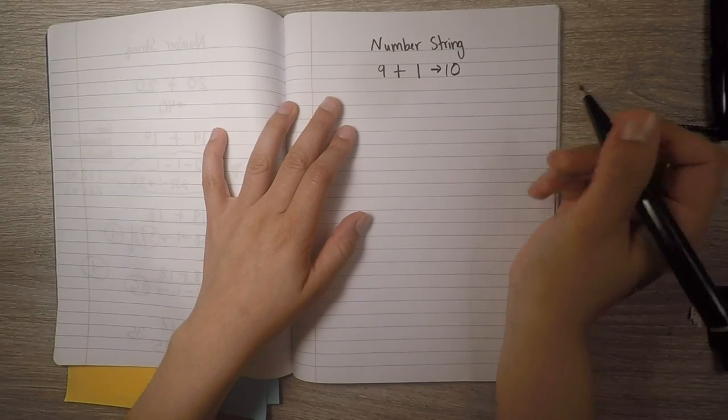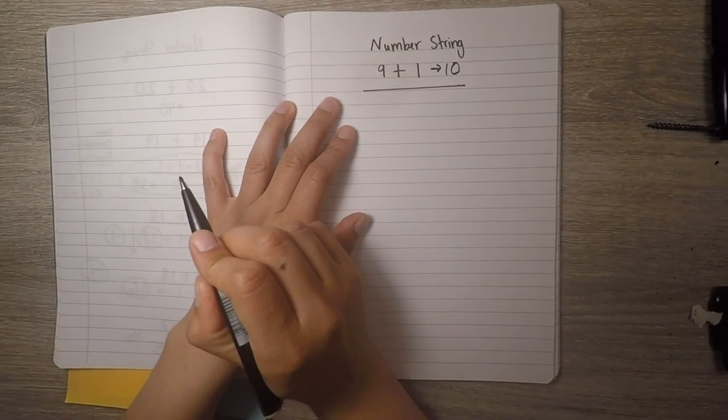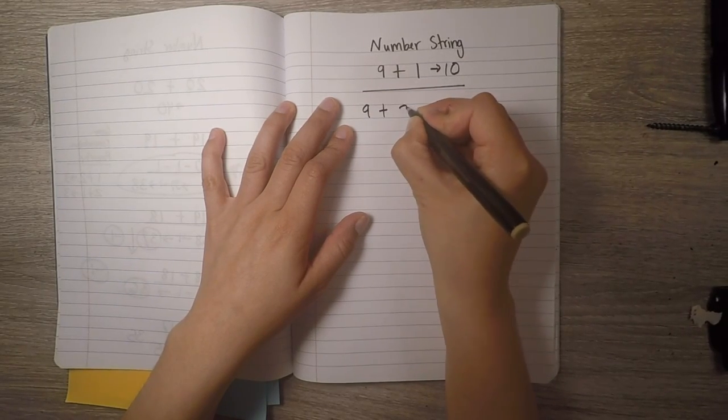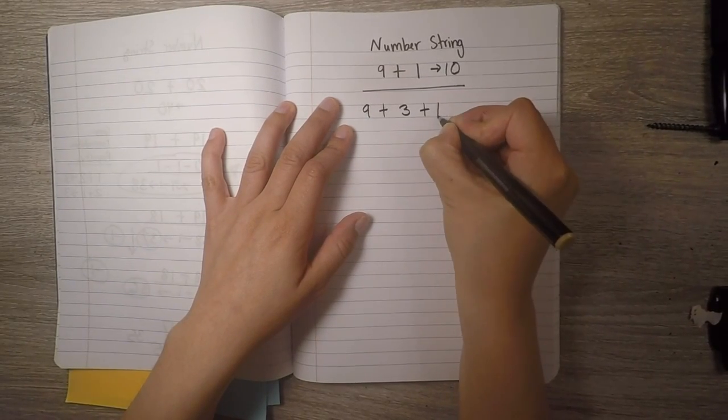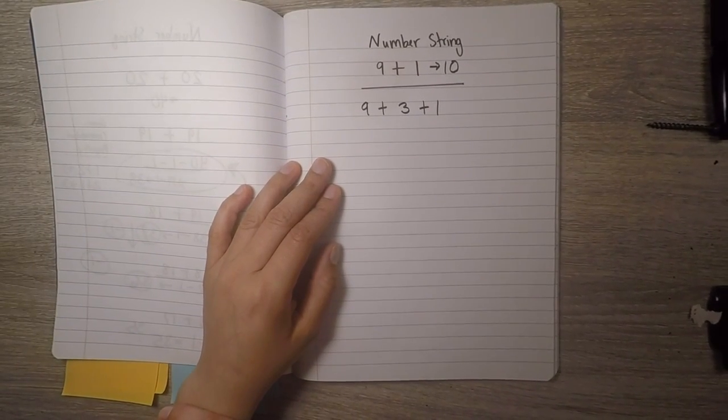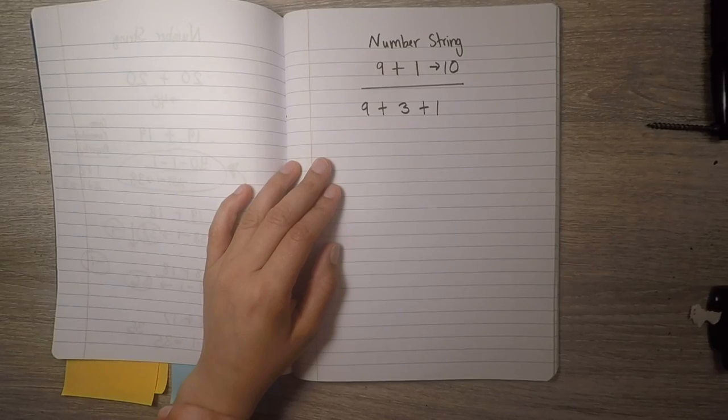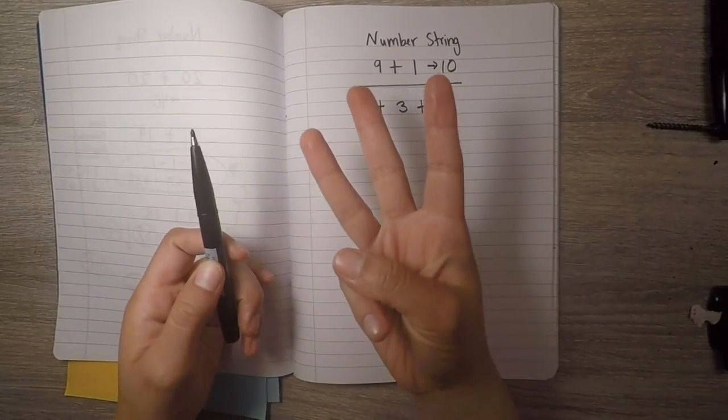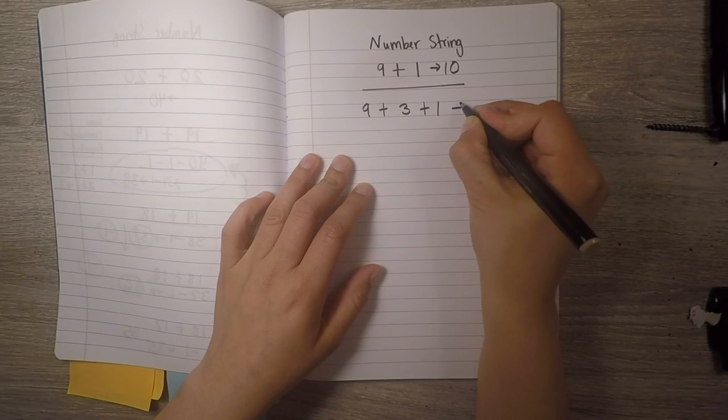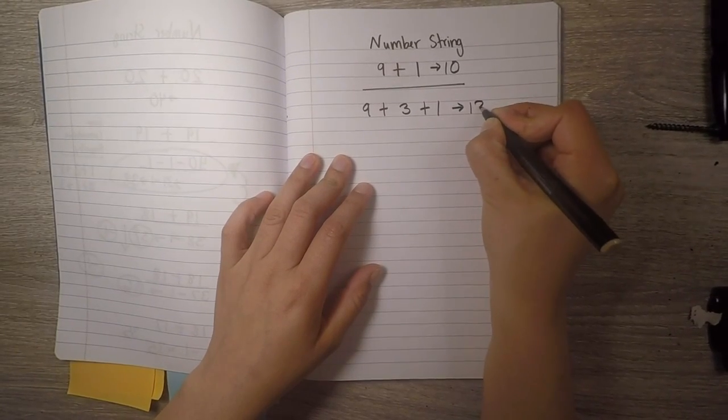Okay, are you ready to use your knowledge of this number sentence to make the next one? Ready? Okay, think. Okay, all together. Three, two, one. What is it? What does that lead to? That's right, thirteen.